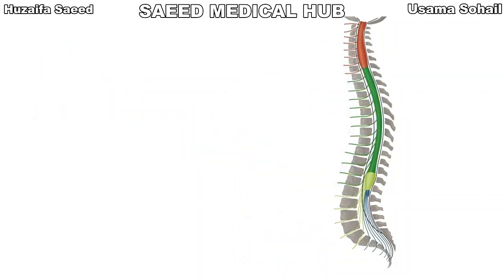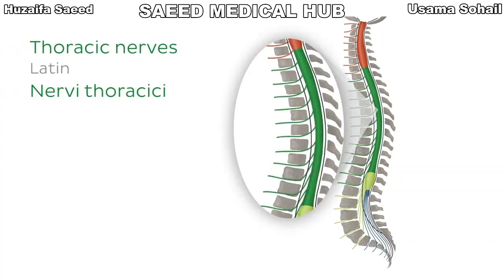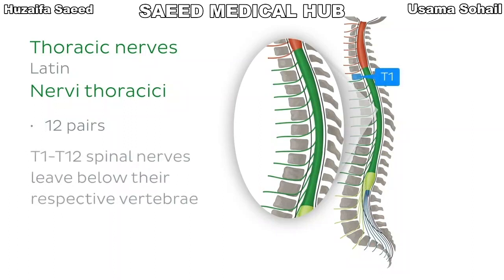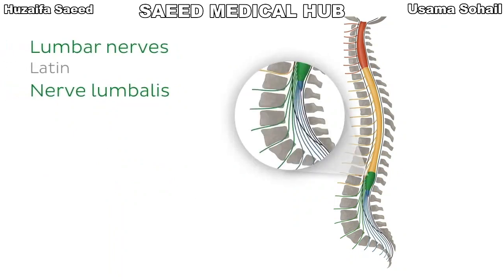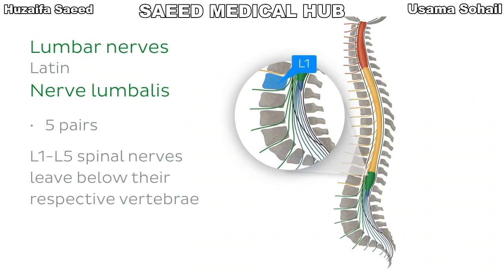Moving on to the thoracic region, you can see the 12 pairs of thoracic spinal nerves highlighted in green. Nothing odd happens here — just like C8, the thoracic nerves T1 to T12 leave below their respective vertebrae through the intervertebral foramina. We're now in the lumbar region, which you can see highlighted on the image, and it's the same story as the thoracic region in terms of exit location. We have five pairs of lumbar spinal nerves, L1 to L5, which leave below their respective vertebrae.